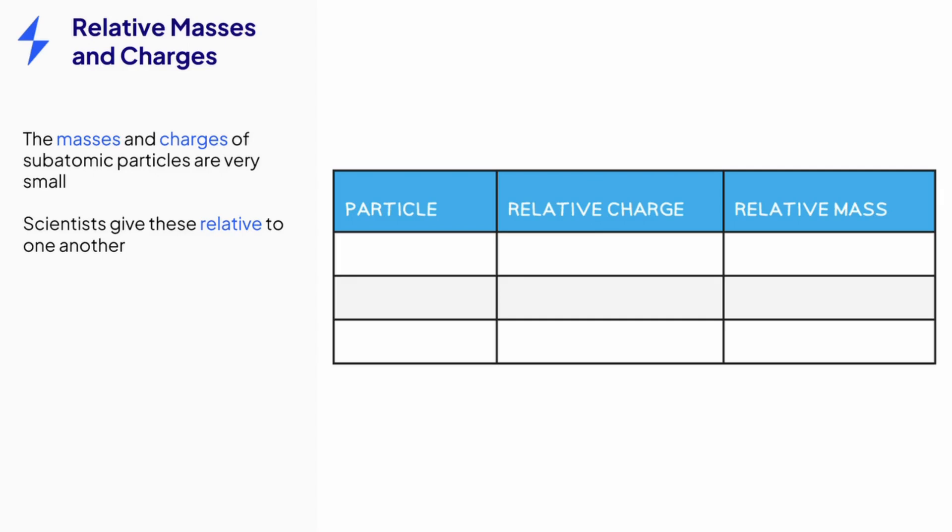You need to know the relative masses and charges for neutrons, protons and electrons. Neutrons have no relative charge. Protons, which are positive, have a relative charge of positive 1 and electrons, which are negative, have a relative charge of negative 1.